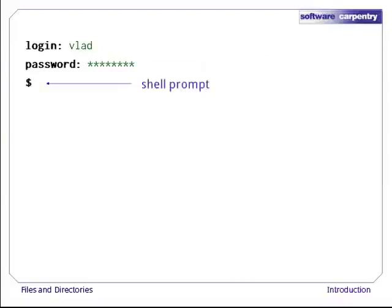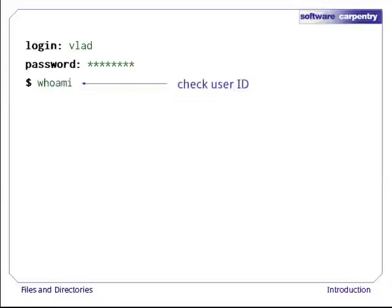Once we have logged in, we'll see a shell prompt, which is usually just a dollar sign, but which may show extra information like our user ID. The shell prompt is exactly like Python's triple-greater-than prompt — it signals that the shell is waiting for us to type something in. Type whoami followed by enter. This command prints out the ID of the current user, i.e., shows us who the shell thinks we are.